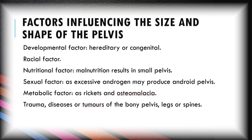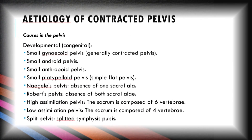Here we discuss the factors influencing the size and shape of the pelvis. The first is developmental factors, which include hereditary or congenital factors. Next is racial factors — according to race, the size and shape of the female pelvis can change. Next is nutritional factors — malnutrition can result in a small pelvis. Sexual factors: excessive secretion of androgen can produce an android pelvis. Metabolic factors: rickets or osteomalacia can alter the pelvis size and shape. Finally, trauma, diseases, or tumors of the bony pelvis, legs, or spine can lead to variation in size and shape.